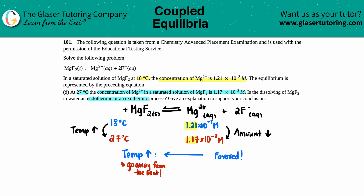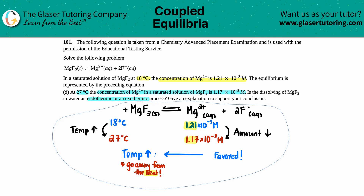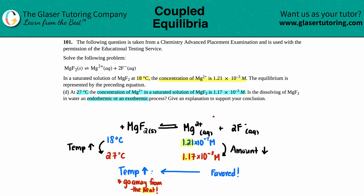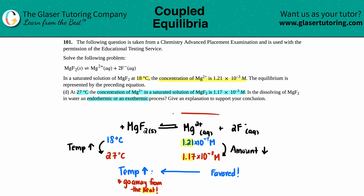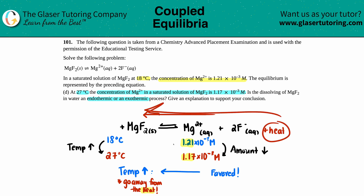Le Chatelier noticed that if the temperature increases you're always going away from the heat — literally away from the word 'heat.' So if we are favoring the left side and running towards the left, I am going away from my heat. That means the heat has to be on the product side, because I'm going away from it. And since the heat is on the product side, that's exothermic — it's an exothermic reaction.